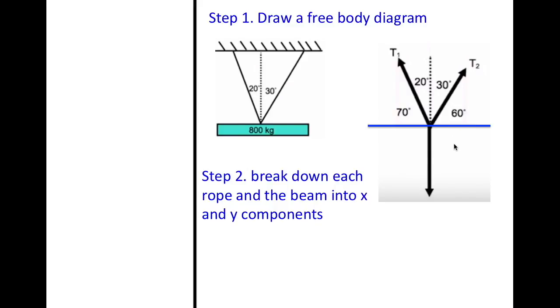Step two is to break down each rope and the beam into x and y components. So what are those? Here's what it looks like. Here is the x and the y for our rope one and our x and our y for rope two. We also do know that when we decide we want to take this 800 kilogram, we do need to transfer this into newtons in order to better work with it. How did I get that? We used the weight equals mass times gravity, and that will give us our weight in newtons. So this is the force of the 800 kilogram beam pulling on the two ropes.